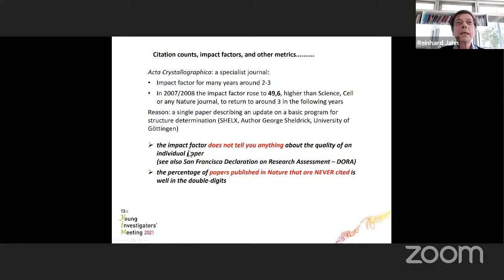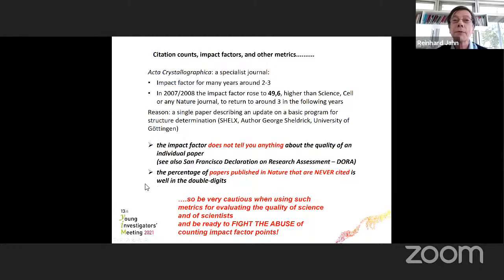Now another example, Acta Crystallographica, specialist journal, impact factor for many years between two and three. In 2007-2008, the impact factor rose to 49.6, higher than Science, Cell, or any Nature journal, to return to about three in the following years. The reason was a single paper from my own place, describing an update of a basic program for structural determination, SHELX, which hit so many quotations, because everyone using this software had to quote that paper that the impact factor of Acta Crystallographica soared through the sky. Now the conclusion is the impact factor, and we have this discussion right afterwards—this I think is very timely for the DORA discussion—the impact factor does not tell you anything about the quality of an individual paper. The percentage of papers published in Nature that are never cited is in double digits. And during my time in the EMBO publication advisory board, the EMBO editors pointed out with some glee that the percentage of papers never quoted in Nature is much higher than in EMBO Journal. And on that note, I would like to conclude and say, basically be very cautious when using such metrics for evaluating the quality of science or scientists, be ready to fight the abuse of counting impact factor points.